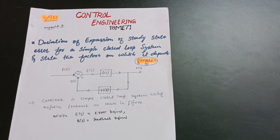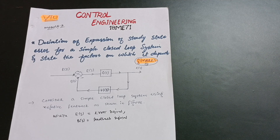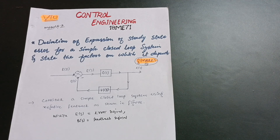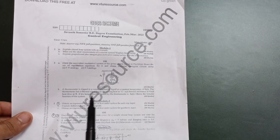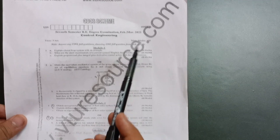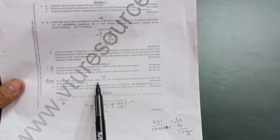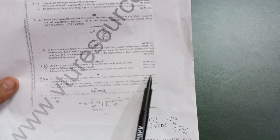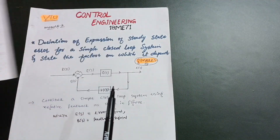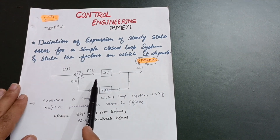Hello everyone, welcome back to my channel. Today I am with another important topic for control engineering 18ME71. I know you are watching this video in examination times — you are the one-night engineers, so stay connected with me till the end. I will give the clear picture of this derivation, which is the most important one as far as VTU examination is concerned — the February/March 2022 paper. The question is: derive the expression of steady state error for a simple closed loop system and state the factors on which it depends.